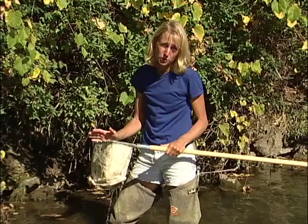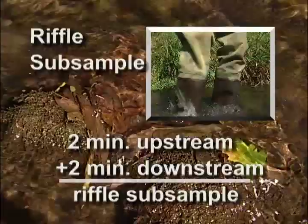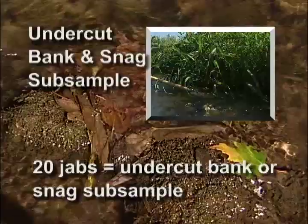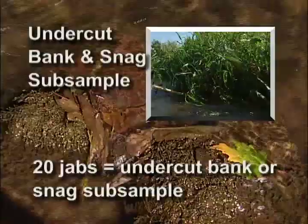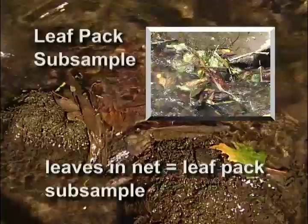To review, a complete biotic index sample consists of three subsamples combined together into one. For riffles, you'll kick for two minutes both at the downstream and upstream ends of the riffle. For undercut banks and snags, one subsample is equal to 20 jabs of the net into that habitat. The goal of leafpack sampling is to collect as much of the leafpack as possible in your net.